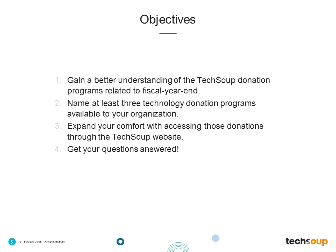Looking at our objectives for today: we'd like you to leave this event with a better understanding of programs related to fiscal year end — especially if you have budget that expires before June 30th for technology expenditures. We'd also like you to be able to name at least three technology donation programs you find valuable, feel more comfortable with accessing donations, and have your questions answered.